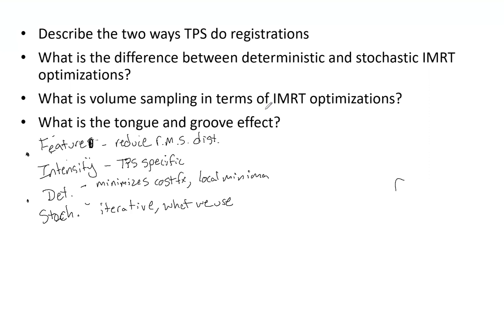Finally, the tongue and groove effect. If two MLC fields are added together, you can see an underdose because the sum of the tongue and groove is less than that of an open field.